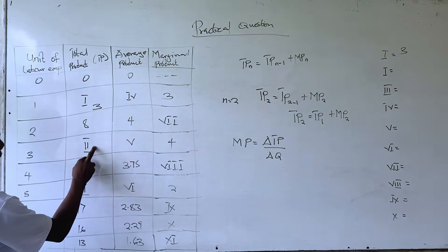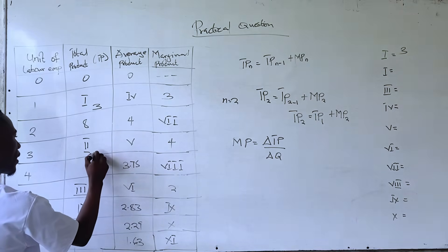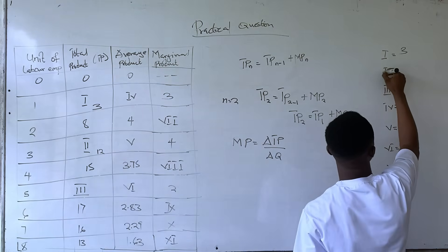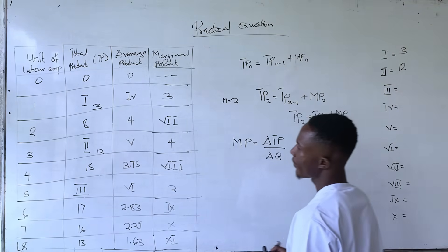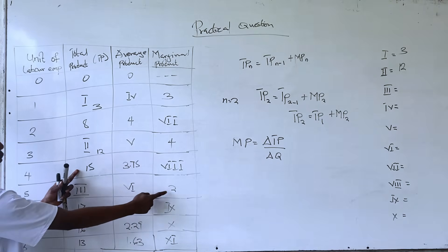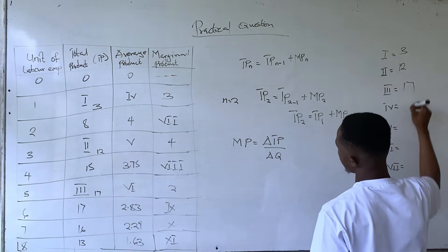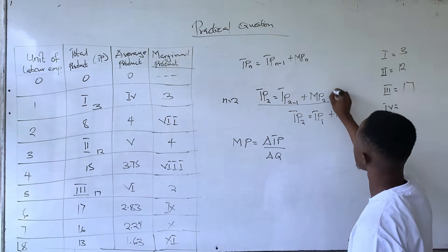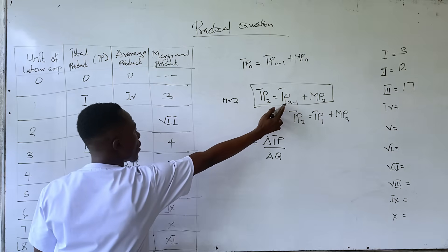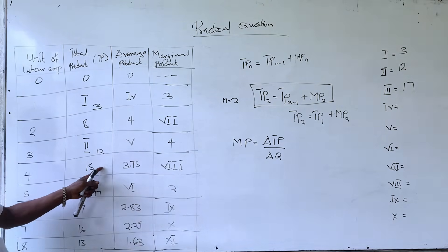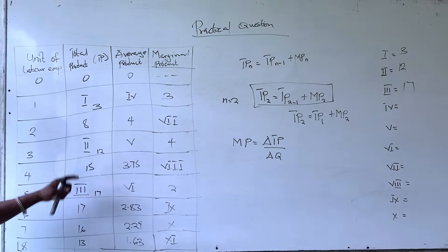We add the current marginal product to the previous total product to get 12. Then for the next one, 15 + 2 = 17. So using this formula: previous total product 15 plus current marginal product 2 gives 17. We are done with the total product.